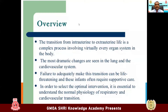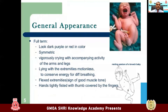Looking at neonatal problems: the newborn period is a transition from intrauterine to extrauterine life — a complex process involving virtually every organ system. The most dramatic changes are seen in the lungs and the cardiovascular system. Failure to adequately make the transition can be life-threatening, and these infants often require supportive care. You have to know the general appearance of a full-term newborn: they are very dark purple-red in color, their movements are very symmetrical, they are vigorously crying with active arms and legs, lying with flexed extremities as a sign of good muscle tone, and hands are tight with the thumb covered by fingers.